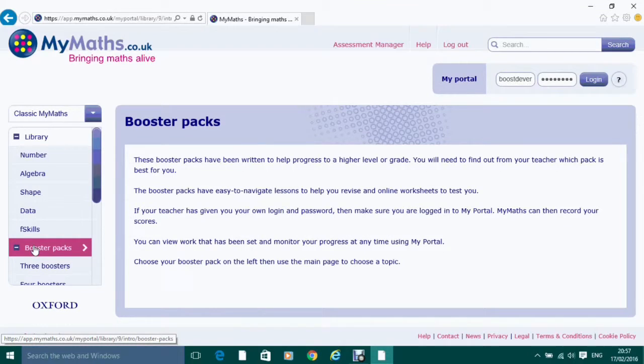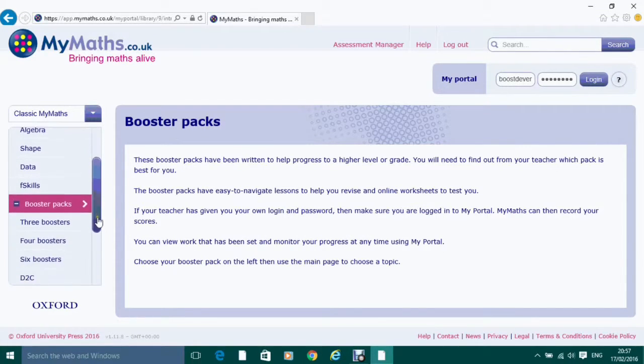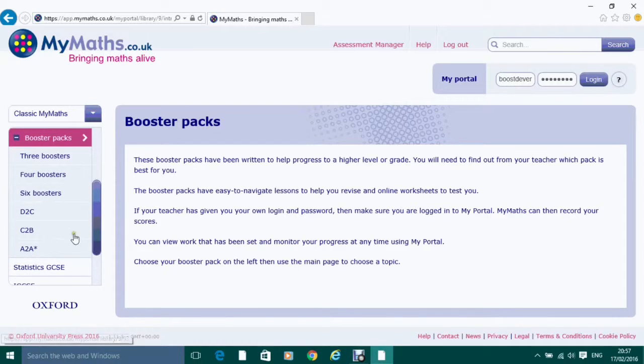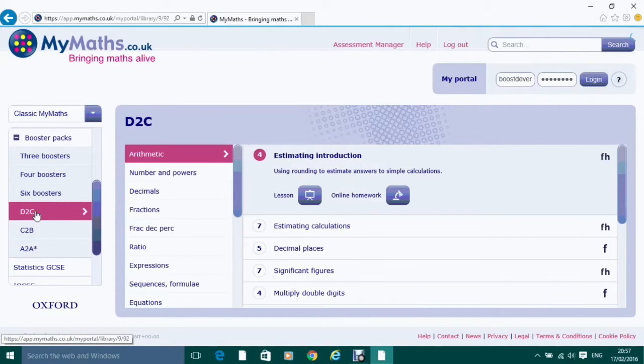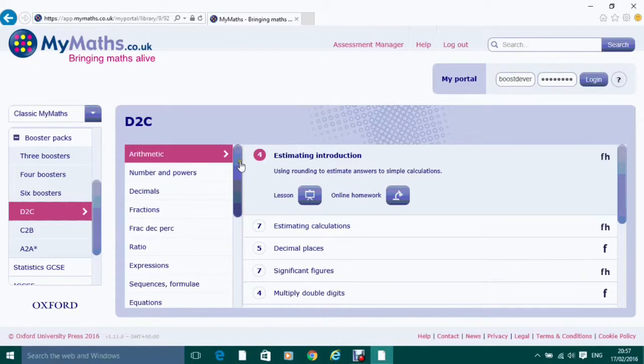One very useful area of the MyMaths website is the use of booster packs. There are booster packs aimed at levels 3, 4, and 6 for Key Stage 3, and the one we're looking at now is the D to C booster packs for GCSE. There are 20 areas for the GCSE one.